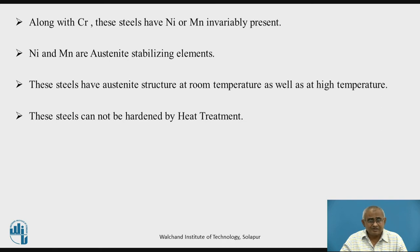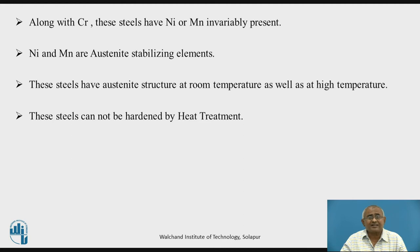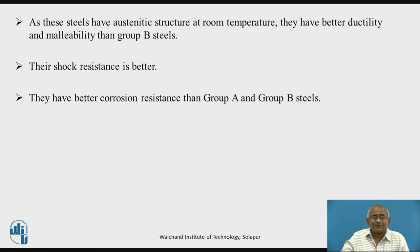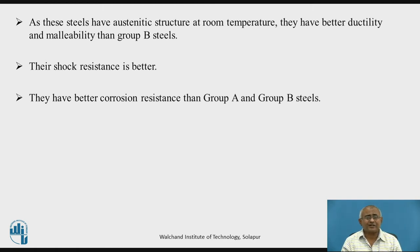As these steels contain austenitic stabilizing elements, these steels will have austenitic structure at room temperature as well as at high temperature, that is up to solidus temperature. This means these steels also cannot be hardened by heat treatment. Similar to ferritic stainless steels, these steels are non-hardenable by heat treatment. But these can be work hardened — they can be cold worked and work hardened. They have excellent ductility, and due to presence of austenite at room temperature, they have better shock resistance. They also have better corrosion resistance than Group A and Group B varieties of stainless steels.